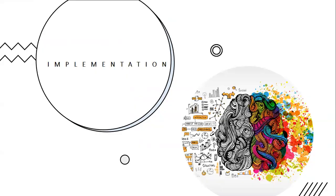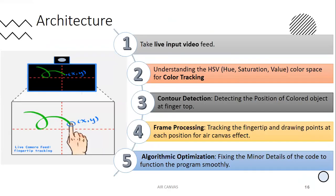The architecture of AIR Canvas involves five steps. First, taking live input video feed. Second is color tracking. Third is contour detection. Fourth is frame processing. And fifth is algorithmic optimization, which will be explained in further slides in detail.